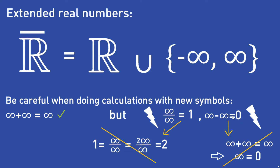If you are interested in all the calculation rules that work with these new symbols in the extended real numbers, you can take a look at the Wikipedia page of the extended real numbers — they have a full list of which calculation rules work and which don't. Such expressions are also called indeterminate expressions. So just keep in mind that there are indeterminate expressions when working with these two new symbols — for example, infinity divided by infinity and infinity minus infinity.